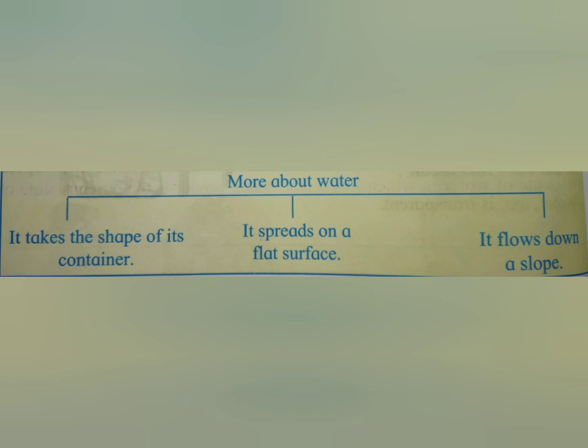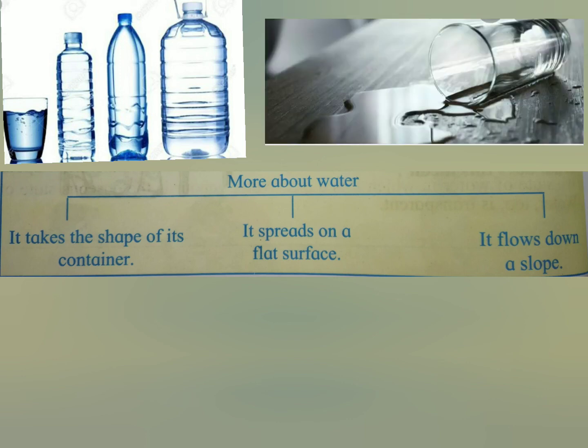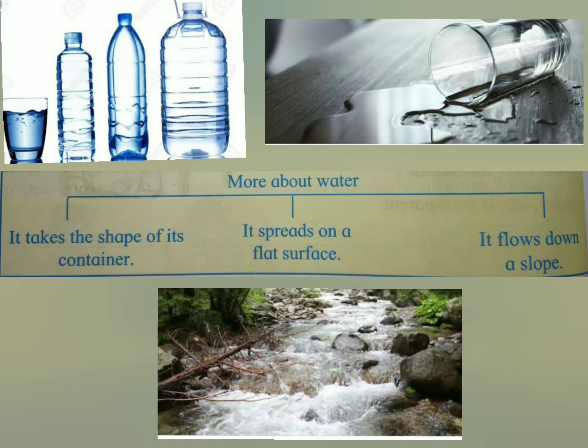So children, which points have we seen just now about water — more about water? First, it takes the shape of its container. Through the experiment of the glass and the dish, we have seen this. It spreads on a flat surface. And it flows down a slope — water flows from up to down.